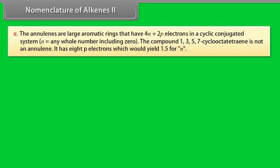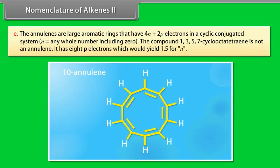E. The annulenes are large aromatic rings that have 4N plus 2 pi electrons in a cyclic conjugated system. That is, N is equal to any whole number including 0. The compound 1, 3, 5, 7 cycloocta tetraene is not an annulene. It has 8 pi electrons which would yield 1.5 for N. Structure of 10-annulene.